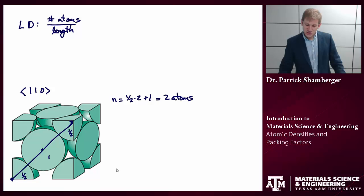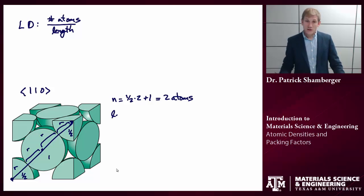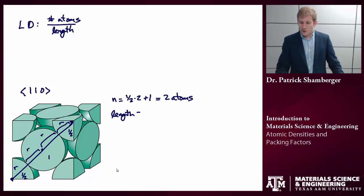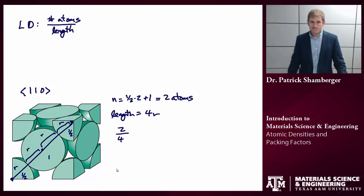What is the length of the direction I've shown? Oftentimes this is just calculated in terms of the radii of the atom. So in this case that length equals 4r. So the linear density of the [1,1,0] direction in the FCC structure is just 2 over 4r, or 1 over 2r.